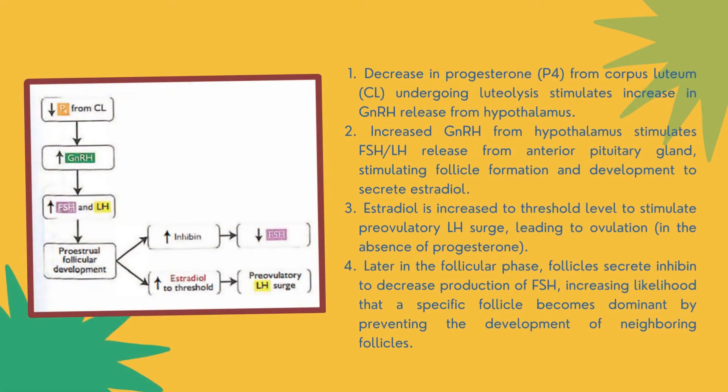Later in the follicular phase, follicles secrete inhibin that causes a negative feedback on FSH secretion from the anterior lobe of the pituitary. The relationship between the hypothalamus, the pituitary, and the ovary during the follicular phase can also be shown in the primary steps leading to the pre-ovulatory LH surge.